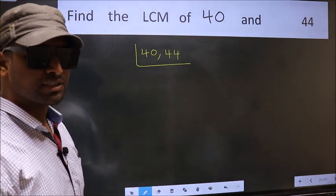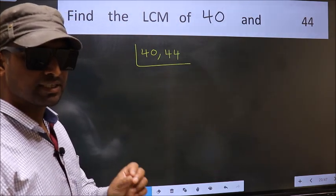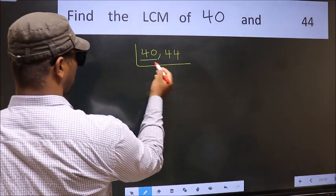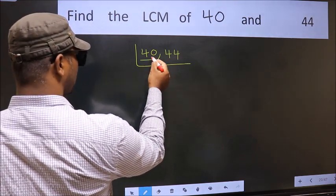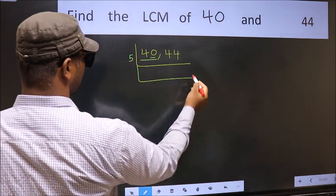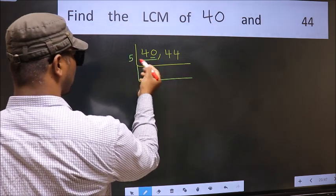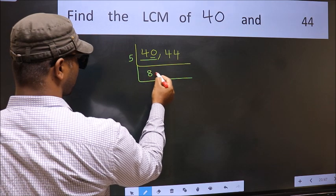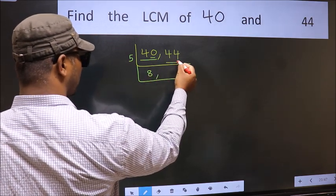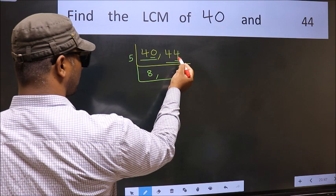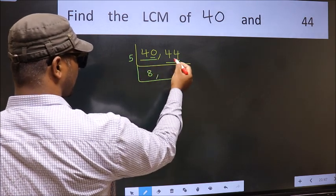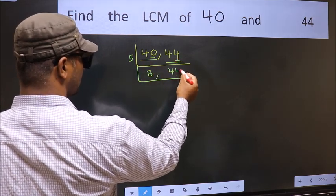Now you should focus on the first number, which is 40. For this number, last digit is 0, so directly take 5. When do we get 40 in the 5 table? 5 eights are 40. The other number is 44. Last digit is neither 0 nor 5, so this is not divisible by 5, so we write it down as it is.